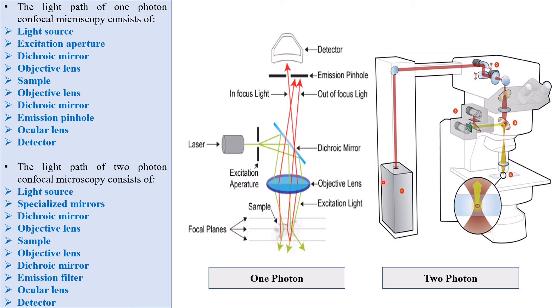Then light passes to sample via dichroic mirror and objective lens. This part is common in one photon and two photon microscopes. After exciting the fluorophore, emission fluorescence again crosses the same path in both of them. Fluorescence is detected via objective lens, dichroic mirror and emission filter, ocular lens and detector.